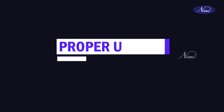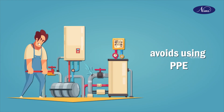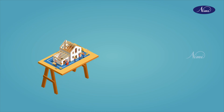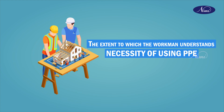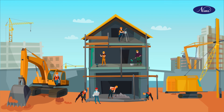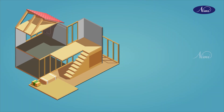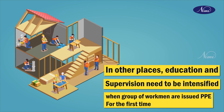What we are going to see now is the proper use of PPEs. Having selected the proper type of PPE, it is essential that the workman wears it. Often, the workman avoids using PPE. The following factors influence the solution to this problem. First, the extent to which the workman understands the necessity of using PPE. The best solution is to make wearing of PPE mandatory for every employee. Education and supervision need to be intensified when a group of workmen are issued PPE for the first time.